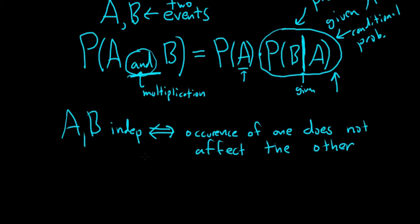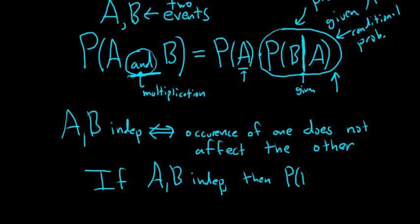One more theoretical thing and then we'll do an example. If A and B are independent, then the probability of B given A - the probability of B given that we know something has occurred, A has already happened - well, A and B are independent, so it does not matter that A has occurred. So this is just the probability of B.